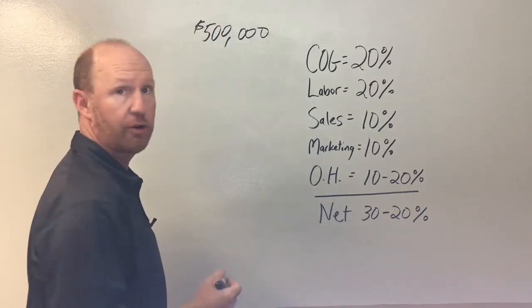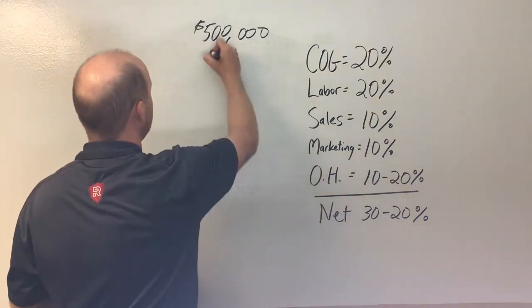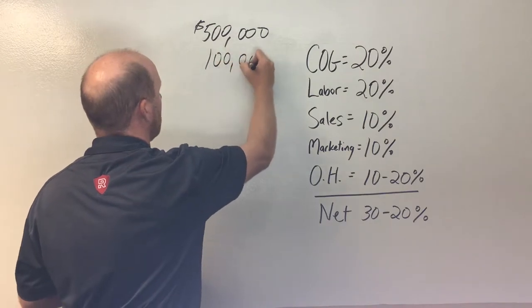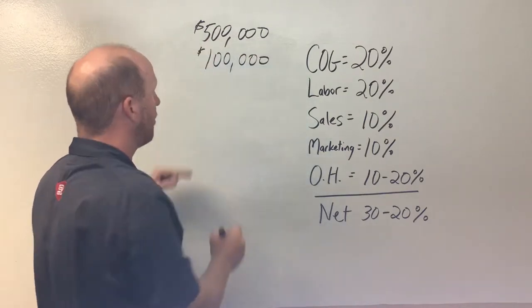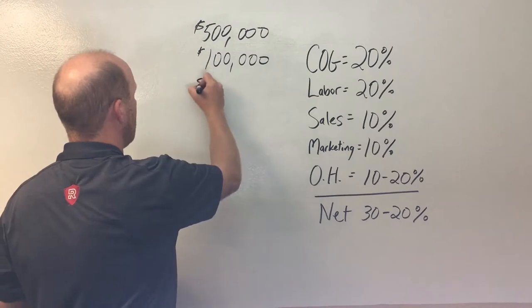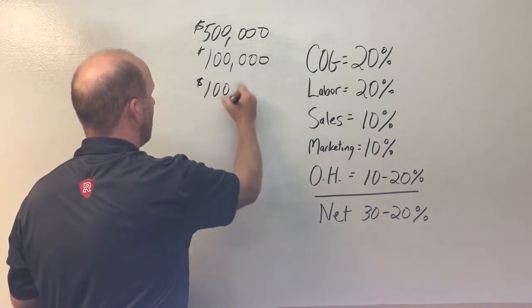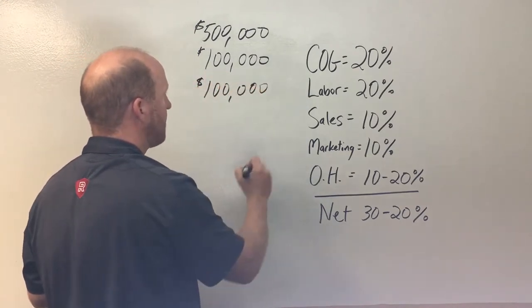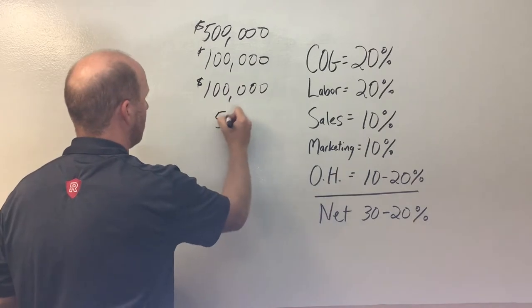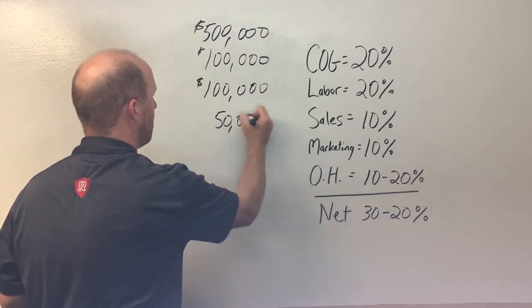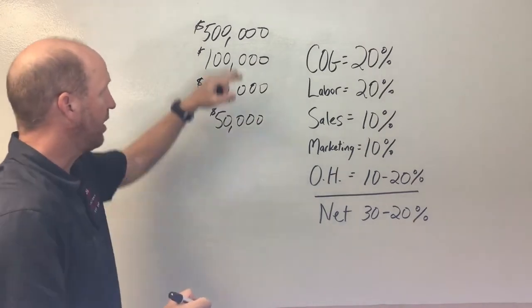And we know our target for cost of goods is 100,000. So that's what our material costs are going to be. Our labor is 100,000. And our sales commissions available is 50 because we've got 10% of a half a million.